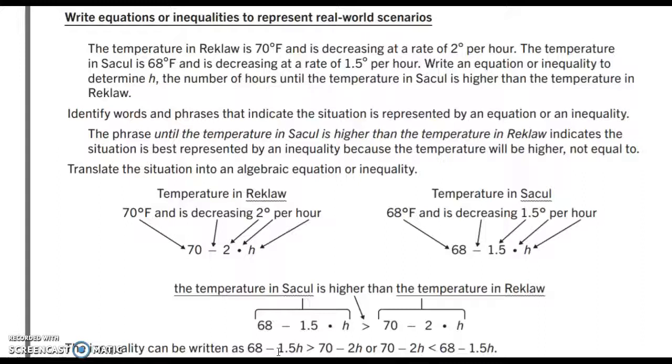The inequality is written as 68 minus 1.5H is greater than 70 minus 2H. Or, it could be written in the alternative where we compare Reclaw to Sacul, meaning that it's a time where Reclaw is going to be less than, as we noticed, the sign has changed, than Sacul. So, what I'm going to do is I'm going to go over to another situation.